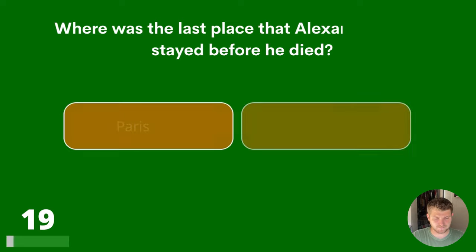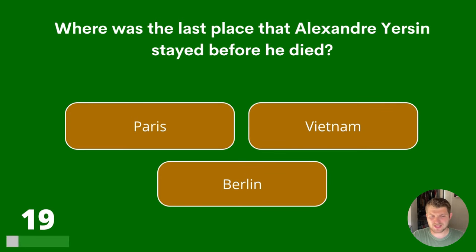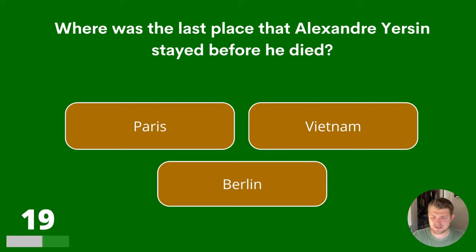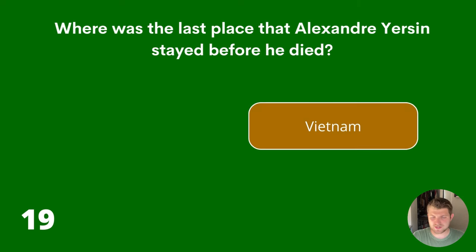Question 19. Where was the last place that Alexander Yersin stayed before he died? Paris, Vietnam or Berlin? The answer is Vietnam.